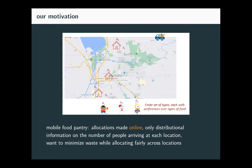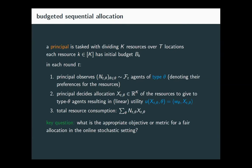This is an online allocation problem because in advance we only know distributional information about the number of people that might arrive at every location — we might construct this from historical data — but we don't know how many people will show up on any particular day. We want to figure out how to make allocations to individuals along the route, ideally allocating fairly while minimizing waste across different locations.